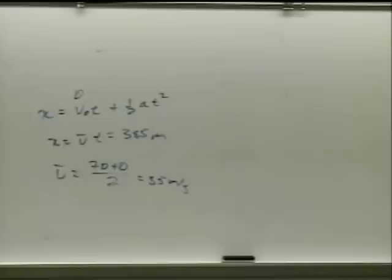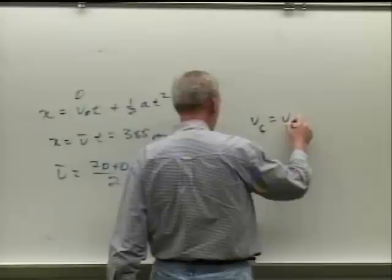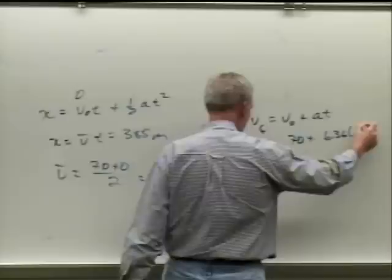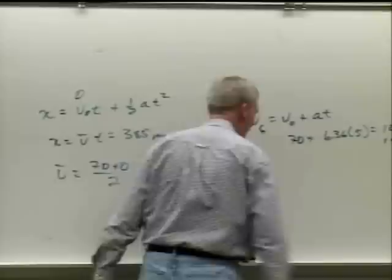It came out to be about 101 meters per second. The final velocity equals v-naught plus a times t: 70 plus 6.36 times 5, which comes out to 101 or 102 meters per second — either one was accepted.